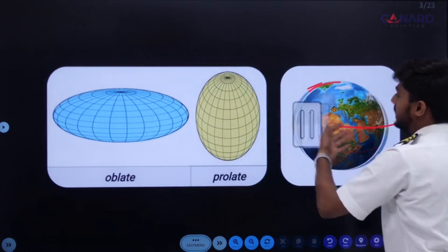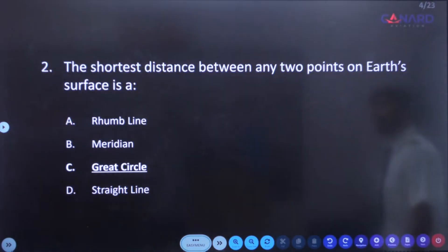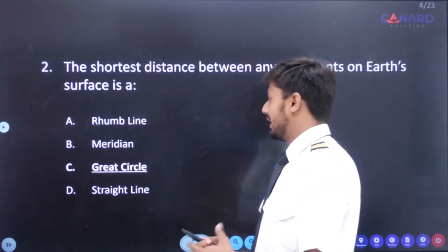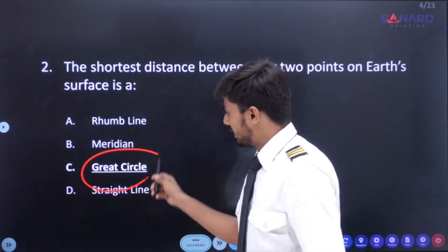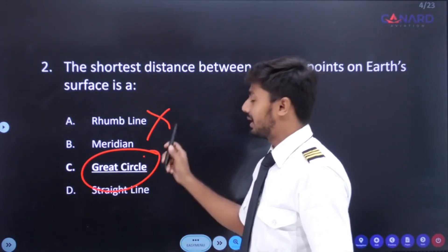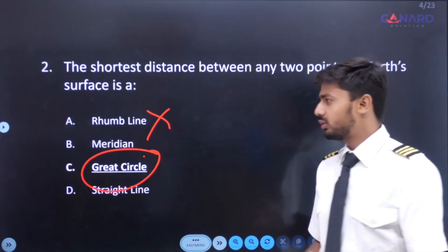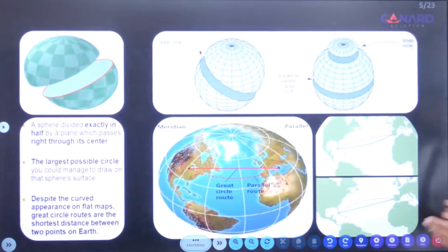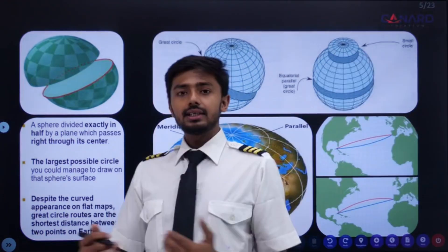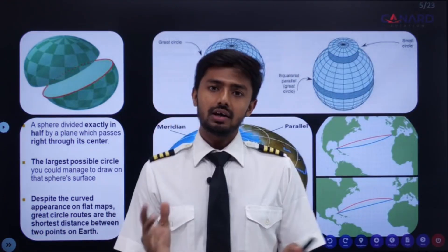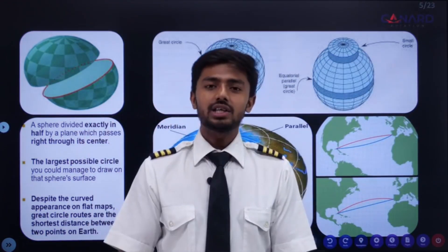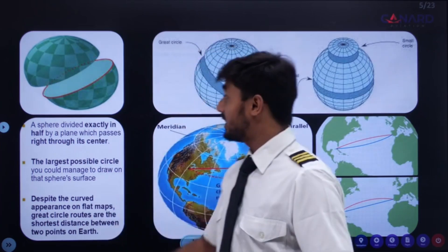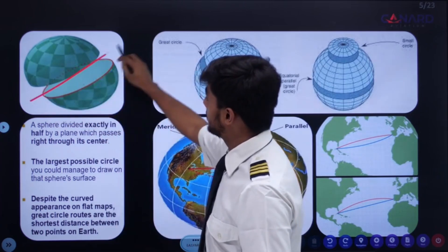Let's jump to the next question. The shortest distance between any two points on Earth's surface is what? The correct answer is a great circle — it is not a rhumb line. Most people tend to confuse with this question. The shortest distance on the Earth's surface between any two points is a great circle. A great circle is the largest circle which can be drawn on the surface of the Earth, and the plane of that circle divides Earth into two equal hemispheres.